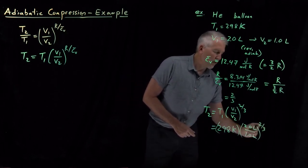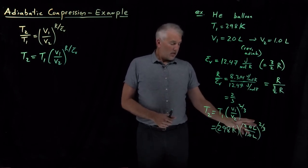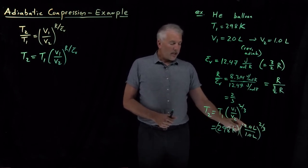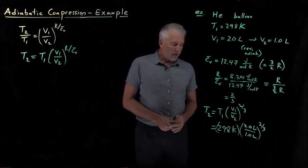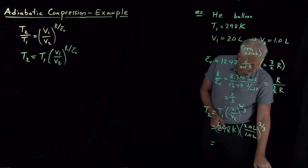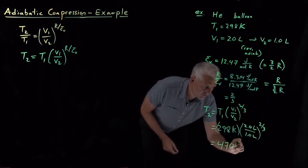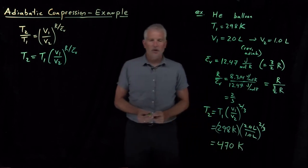Two to the two-thirds is a number that we can use our calculator to determine. When I calculate two to the two-thirds and multiply by 298 Kelvin, what I find is a value of 470 Kelvin.